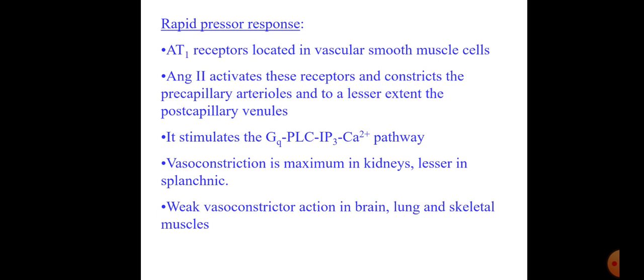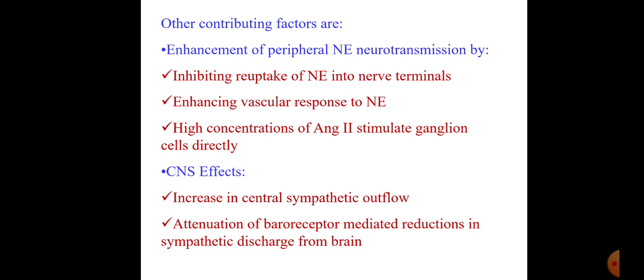In the rapid pressure response, AT1 receptors located in vascular smooth muscle cells are activated by angiotensin 2, causing constriction of precapillary arterioles and, to a lesser extent, post-capillary venules. It acts via Gq-phospholipase C-IP3-calcium pathway, causing vasoconstriction, which is maximum in the kidney and also present in splanchnic circulation. Angiotensin 2 also tends to increase norepinephrine activity by inhibiting reuptake into nerve terminals, thereby enhancing vascular response to norepinephrine and increasing sensitivity to norepinephrine.